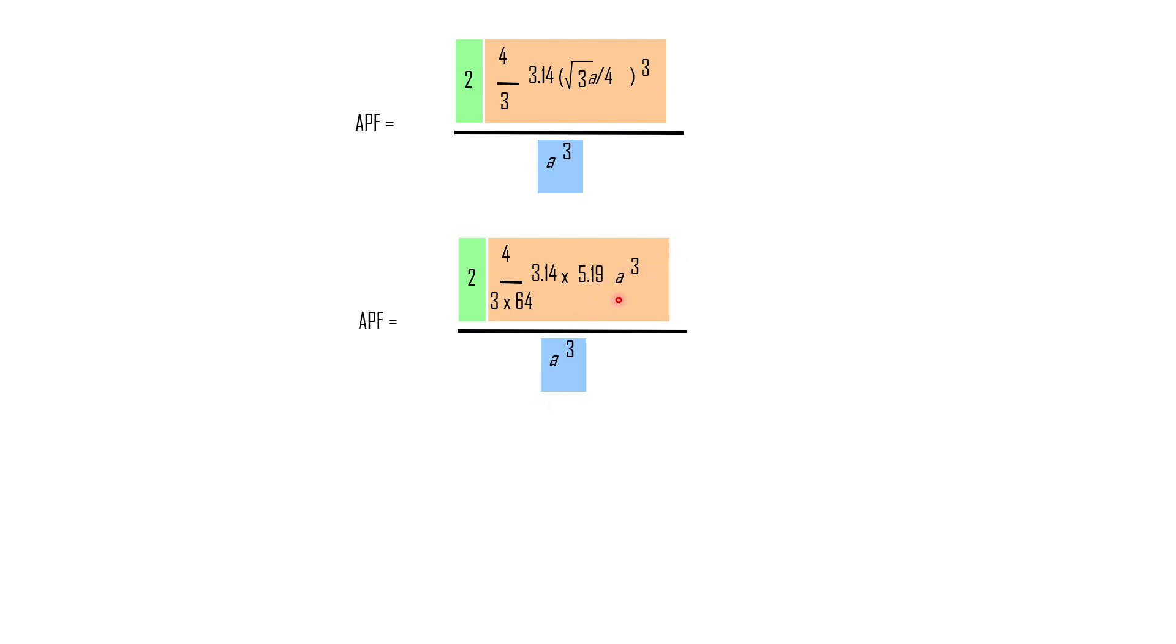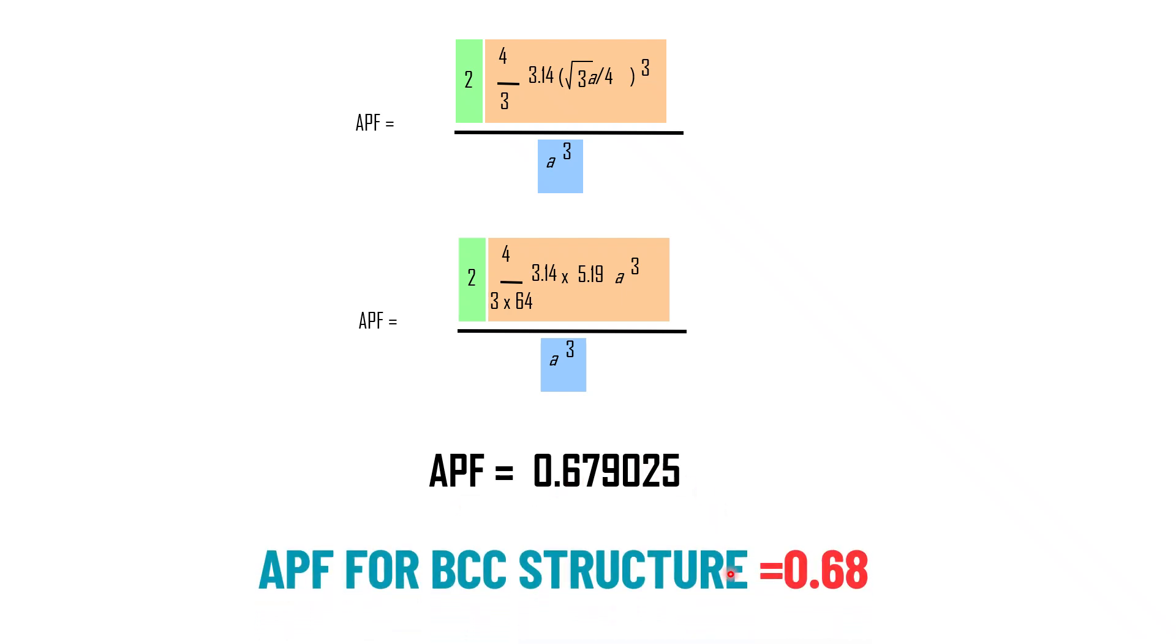From the numerator, this a cube and this a cube will cut down and if you do the further calculations, you will get to know APF will be equal to 0.679025. We can say APF for BCC structure is equal to 0.68. Atomic packing factor is equal to 68 percent. It means 68 percent of the total space is occupied by the atoms in BCC structures and rest of the space will be the white space.